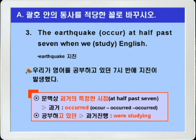답을 쓸 때는 스펠링에 특히 조심해야겠습니다. occur는 뒤에 강세가 있기 때문에, R이 하나 더 들어가서 O-C-C-U-R-R-E-D, 이렇게 써야겠습니다. 그리고 관계부사 when 이하는 문맥상으로 따져보면, '공부하고 있던' 이런 의미가 되므로, 과거진행형을 써야겠습니다. 그래서 study는 주어에 맞춰서 were studying, 이렇게 쓰면 정답이 되겠습니다.